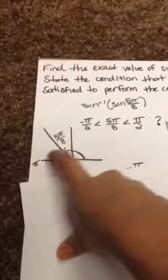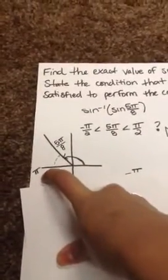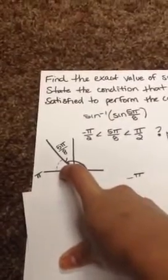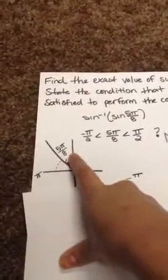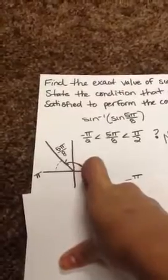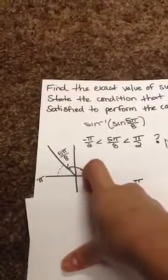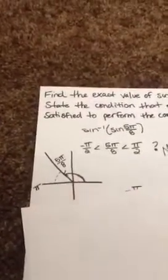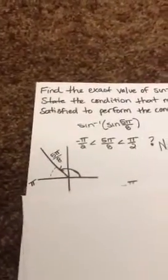So you have 5π over 8 and π. So whatever's between it, and I think it's 3π over 8. Because 5π over 8 plus 3π over 8 is 8π over 8, and that equals π. So your missing part right here is 3π over 8.